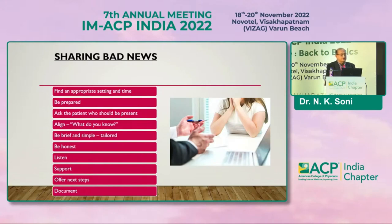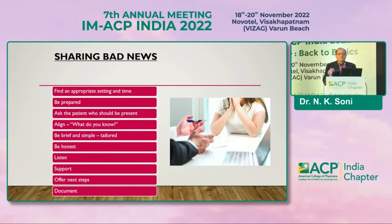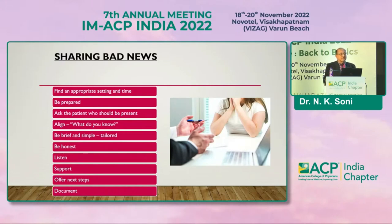How should we share bad news? Find an appropriate setting and time, and be well prepared about the disease process and outcome — these are questions that will come from the patient's relations. Ask the patient who should be present for discussion of prognosis and treatment. Be brief and simple, be honest in explaining the disease process and outcome. Have the patience to listen to the relatives — sometimes once we know we are not able to cure the patient, we lose patience altogether.